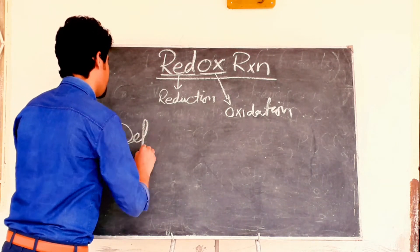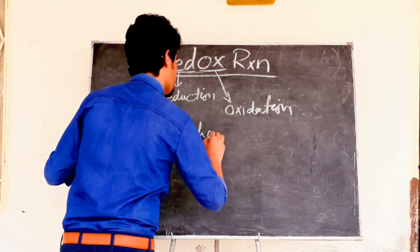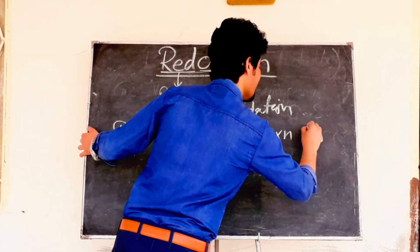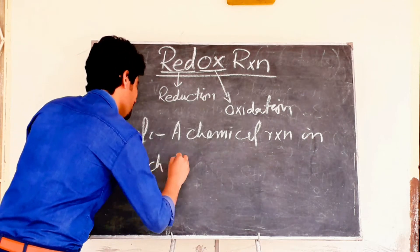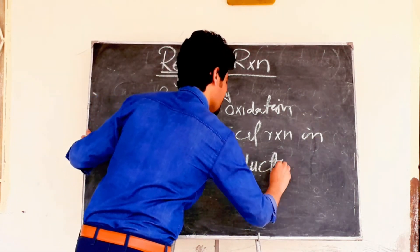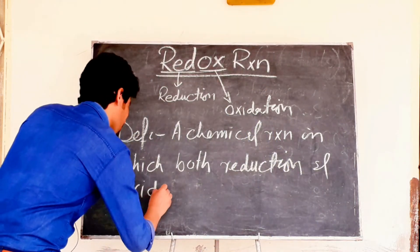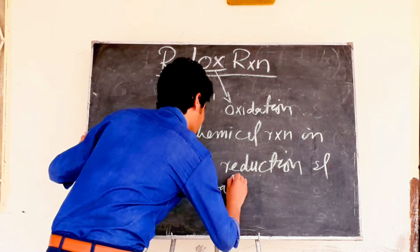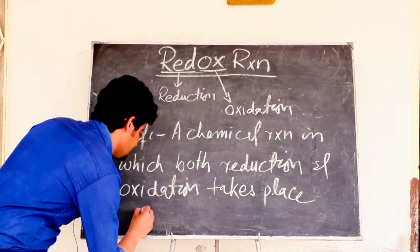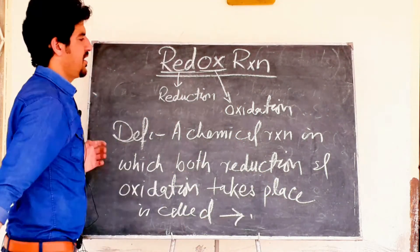We can define redox reaction as a chemical reaction in which both reduction and oxidation take place simultaneously. Such a reaction is called a redox reaction.